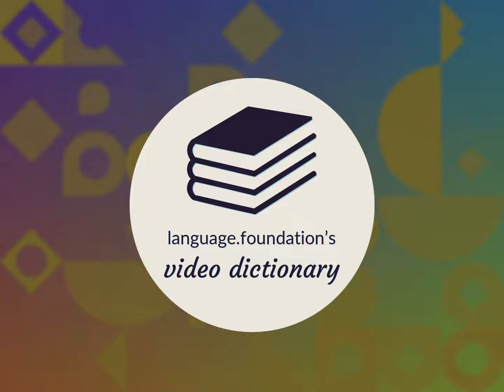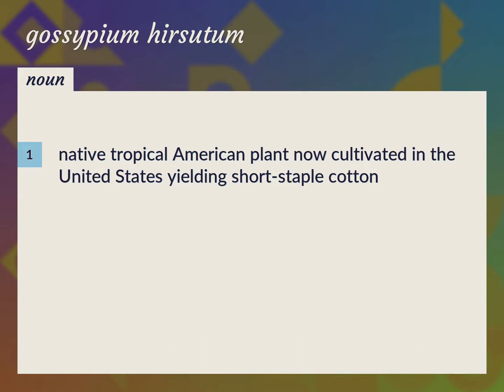Language.Foundation's Video Dictionary, helping you achieve understanding. Native Tropical American plant now cultivated in the United States, yielding short staple cotton. Upland Cotton.